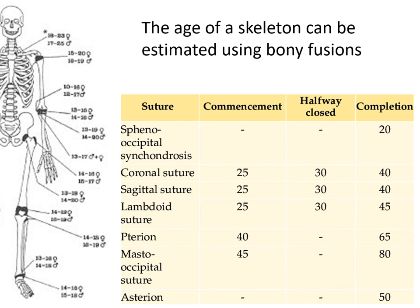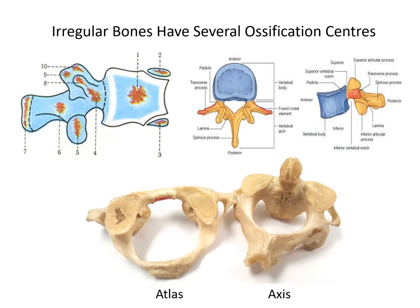These fusions can be used to age a skeleton in forensic analysis. The ages at which diaphyses fuse to their epiphyses occur within childhood and teenage years. The complete fusion of sutures within the skull can also be used to age older skeletons — in elderly individuals the sutures in the skull are usually completely gone, so the cranium looks like it's just one bone.